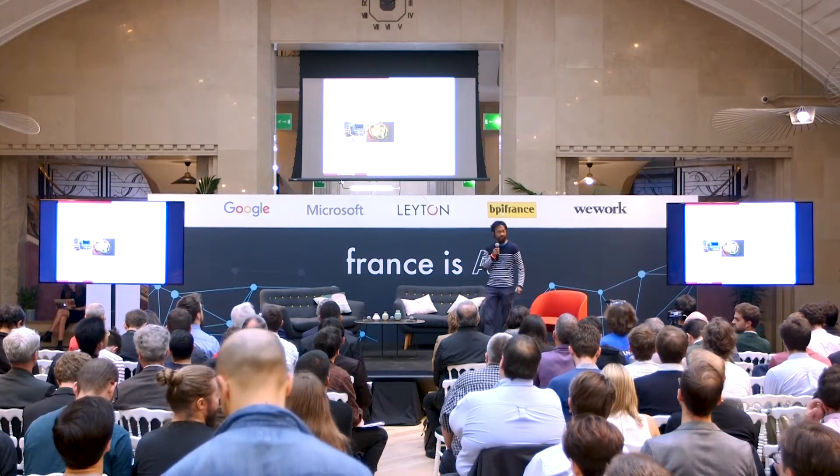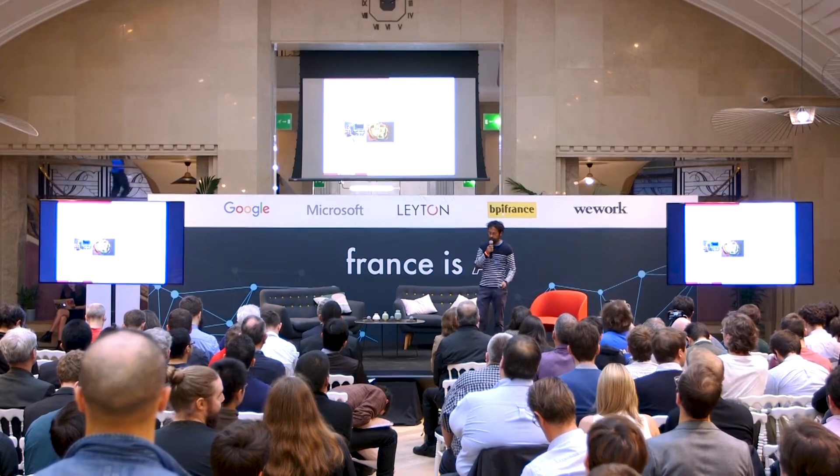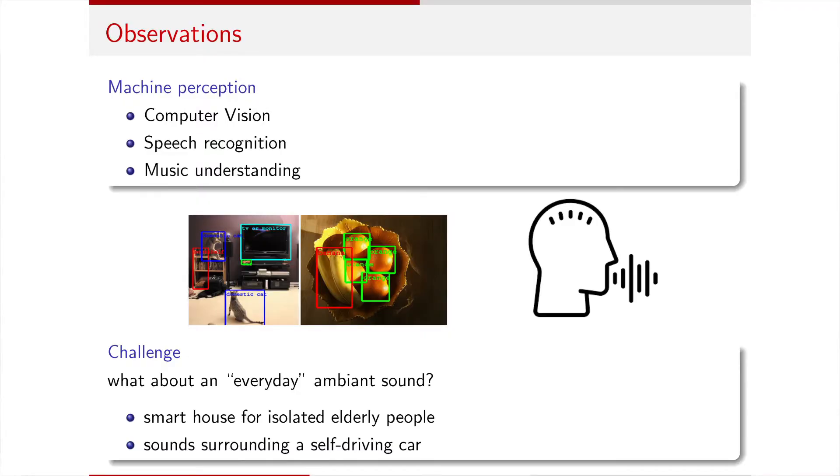Let me start with a few observations. Owing to recent progress in computer vision, a machine can now recognize objects in images and even caption images. Speech recognition is almost solved, and we can voice-command devices like Alexa or Google Home. Machines can also understand music, so you can ask a personal assistant to play music from the 90s containing guitars. But machines still struggle in understanding everyday sounds.